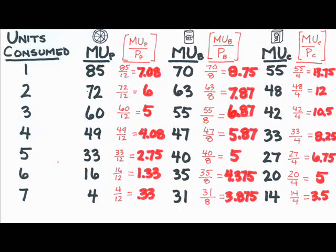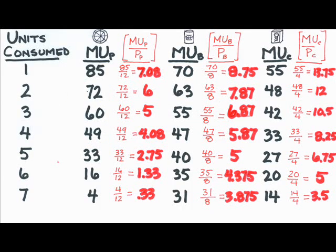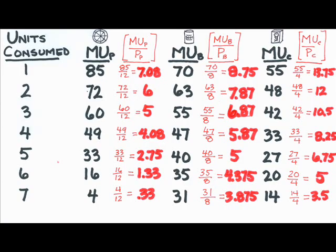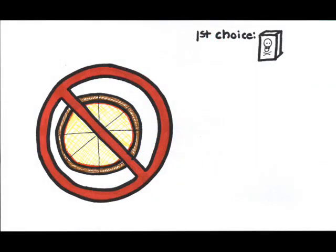No. Take a look at that first pack of cigarettes. Even though it has lower added utility than either pizza or beer, it's also cheaper than the other products. Per dollar, the cigarettes yield more additional satisfaction. So the consumer's first choice is to buy the first pack of cigarettes. At $4, the consumer still has $96 left.